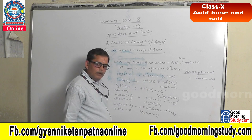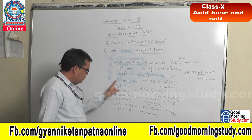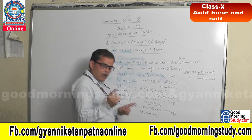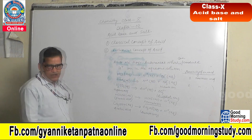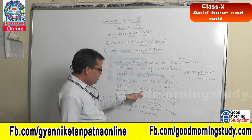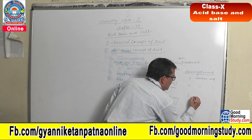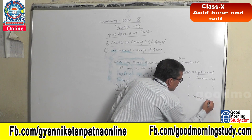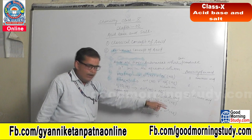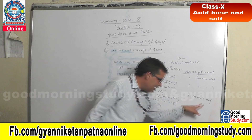Similarly, HNO3 — can you tell me what is the basicity of that acid? It is also producing one H+ ion, hence its basicity is one, so it is also an example of a monobasic acid. Now H2SO4 is producing two H+ ions, so its basicity will be two — hence it is called a dibasic acid. Why is it called dibasic acid? Because it is producing two H+ ions in the aqueous solution.